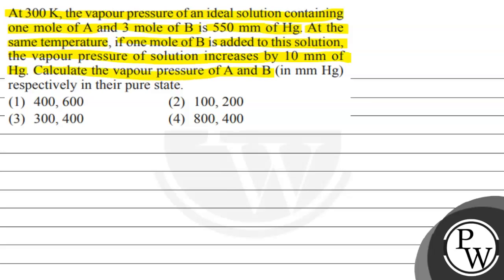Calculate the vapor pressure of A and B in mmHg respectively in their pure state. The options given are: first, 400 and 600; second, 100 and 200; third, 300 and 400; fourth, 800 and 400.